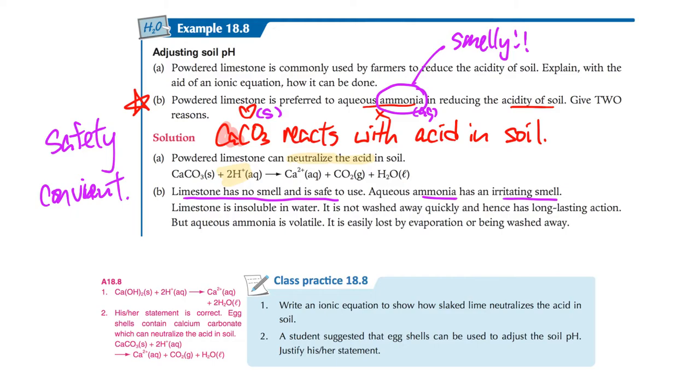Because we're applying this to soil, which is outdoors most of the time, it will be subject to rainwater. When rainwater comes down, ammonia is in solution form and will be easier to be washed away. Remember this part: ammonia is volatile and easily lost by evaporation or being washed away. But limestone is different. Limestone is calcium carbonate which is insoluble, so it will not wash away quickly. Therefore, it has a long-lasting action. This is a good question, a unique one. Have a look at this one and put a tag in your textbook.